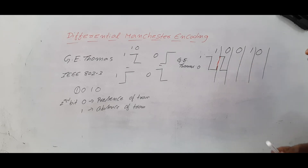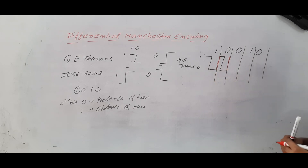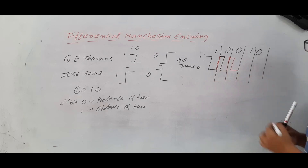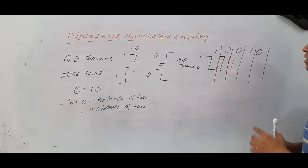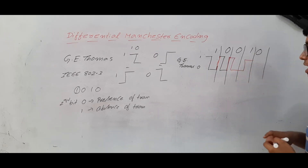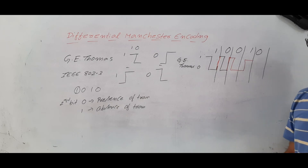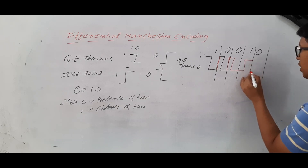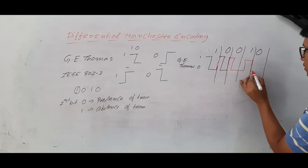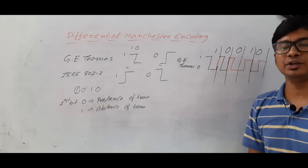Then again there is a 0. If again 0 is there, there is a presence of transition. From here to here you have to shift, and then you have to represent. Then you got a 1 — 1 means absence of transition, meaning from here you have to go back. Then again there is a 0, which means presence of transition — from high to low you have to go and then represent. This is the way differential Manchester encoding is represented according to J.E. Thomas.